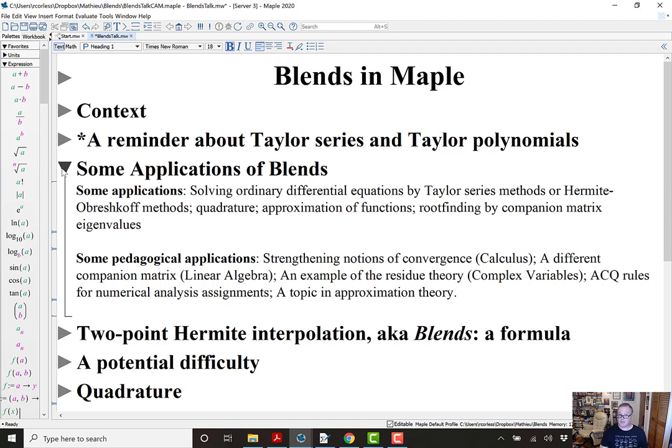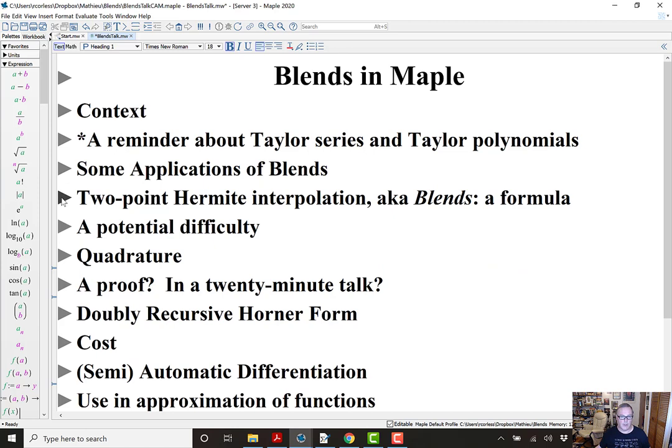In linear algebra, you would use the companion matrix that I just mentioned. If you're teaching complex variables, the derivation of the formula for Hermite interpolants is a beautiful example of the residue theory. If you're teaching numerical analysis, the quadrature rules that are generated by blends, they have an infinite family of them so you can get different ones from what's available on stack overflow and these other kinds of things. So, it makes for unique assignments. And, of course, it's a topic in approximation theory.